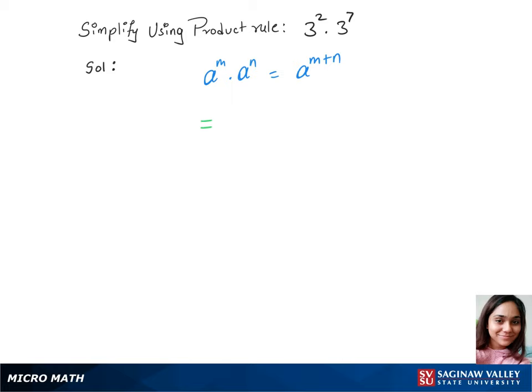We have the same base here, which is 3. Let's put 3 to the power 2 plus 7. That gives us 3 to the power 9. So that's the answer.